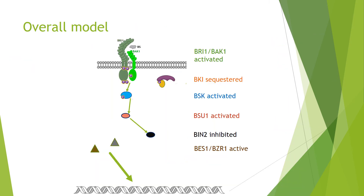Now to our overall model. At the top, activation of the receptor by a brassinosteroid: BKI is sequestered, BSK is activated and expelled from the cell membrane complex, allowing it to phosphorylate and activate BSU1 phosphatase. The phosphatase inhibits BIN2 kinase, which is then no longer able to phosphorylate the transcription factors BES1 and BZR1. Therefore, when brassinosteroids are present, BES1 and BZR1 are active in the nucleus and cause transcription of brassinosteroid-stimulated genes.